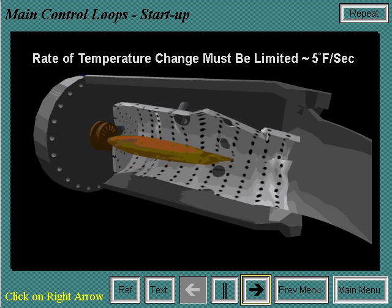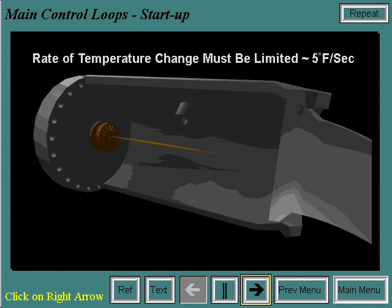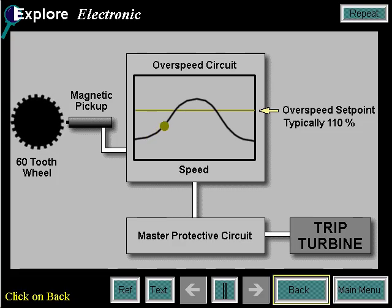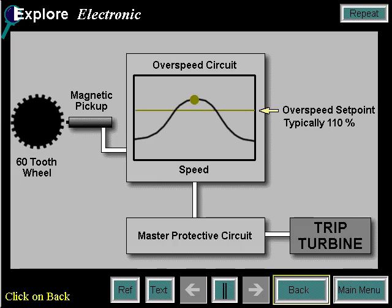High fluctuations in temperature can reduce the life of internal hardware. Different materials heat at different rates, so the rate of temperature change must be limited at approximately 5 degrees per second. The electronic overspeed protection function compares the turbine speed signal derived from magnetic pickup sensors to an overspeed set point. When the turbine speed signal exceeds the set point, the overspeed trip signal is transmitted to the master protective circuit to shut down the turbine.